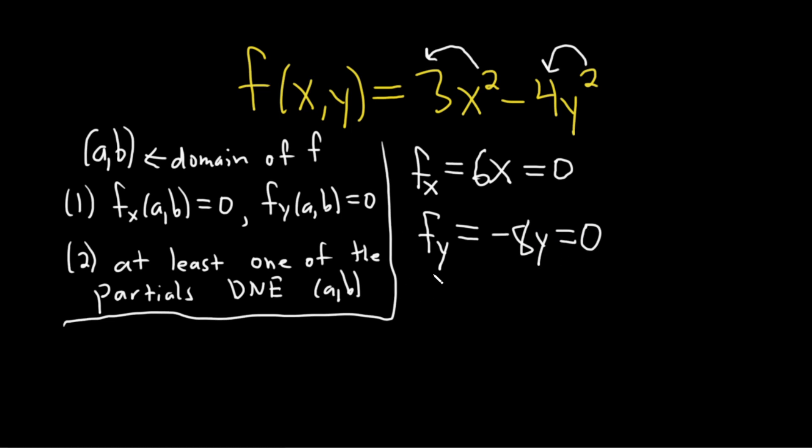So now we just solve this system of equations. It's pretty easy. We just divide by 6 and divide by negative 8. And we see that we have x equals 0 and y equals 0.